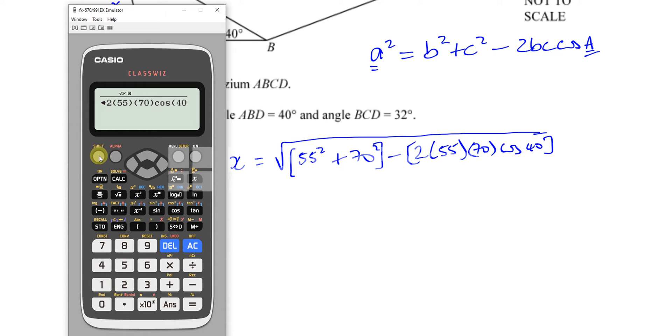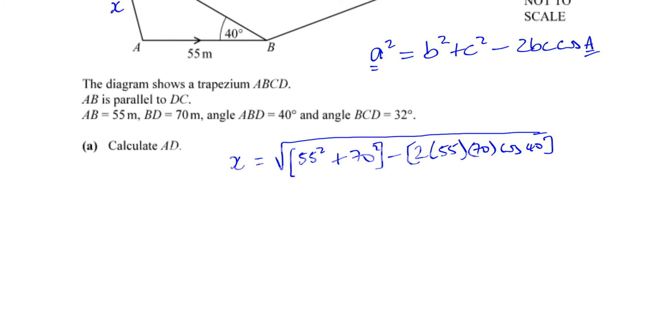So we've got the square root of 55 squared plus 70 squared minus 2 times 55 times 70 times cosine of 40. Now I'm making sure that the calculator is in degree mode. I'm using trigonometry, using cosine, so I have to tell the calculator that what I put in there is in degrees. You press the equal button.